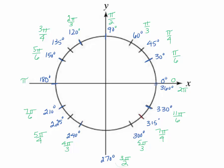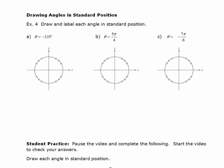So hopefully this will help you to break up the circle in both radians and degrees. In the next part of this lesson, we're going to draw angles in standard position. Please pause the video and bring yourself to the page where we're going to draw angles in standard position. Example 4: we're going to draw 3 different angles in standard position, with the circle broken up into multiples of 30 degrees and multiples of 45 degrees to help you out.